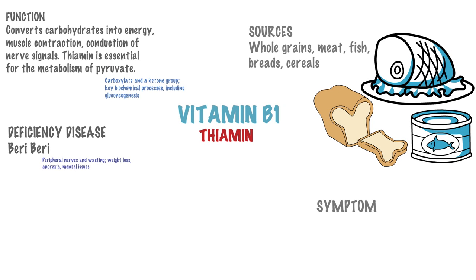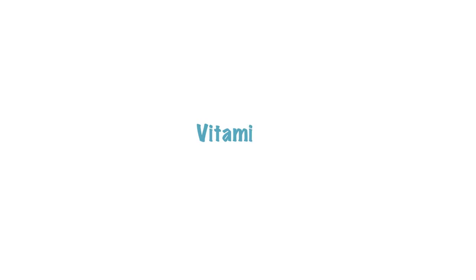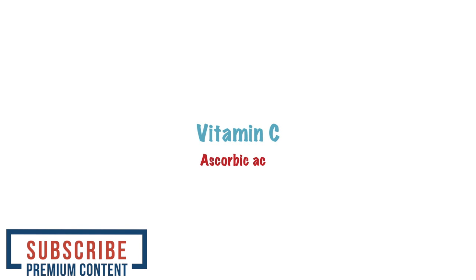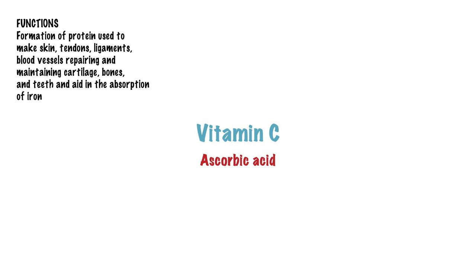Now let us look at Vitamin C. We have another name for this vitamin: ascorbic acid. Vitamin C plays an important role in many physiological processes in humans. It is needed for the repair of tissues in all parts of the body. The important functions of Vitamin C include the formation of protein used to make skin, tendons, ligaments and blood vessels, healing wounds and forming scar tissue. It also plays a role in repairing and maintaining cartilage, bones and teeth, aiding in the absorption of iron, and can also act as a reducing and capping agent for metal nanoparticles.